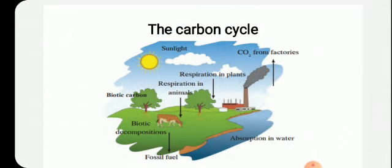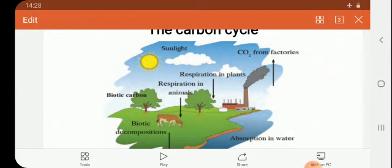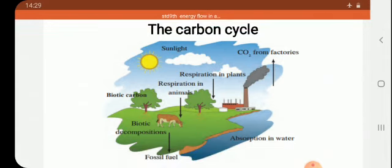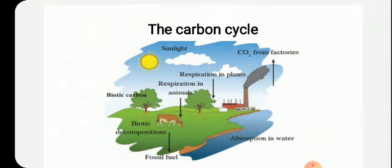Plants prepare food in the form of proteins, fats, and carbohydrates. This prepared food is used by herbivorous animals. These herbivorous animals are then used by carnivores — carnivores feed upon herbivores. In this way, biotic carbon is transferred from plants to herbivores, then to carnivores, and from carnivores to apex consumers.